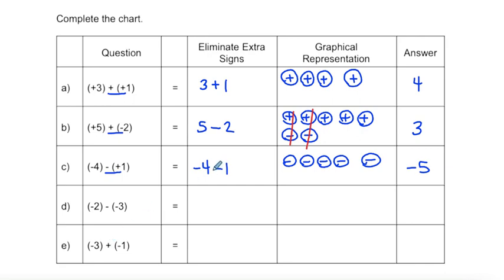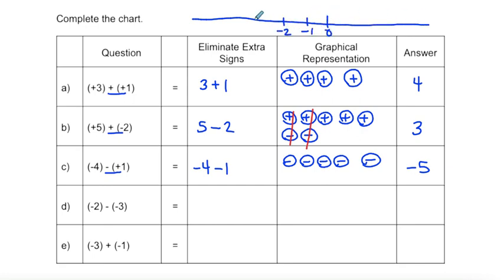This is where it can be confusing, because when we subtract we think the answer should be lower — and negative five is lower than negative four, even though five is greater than four as a positive number. On a number line: starting at negative four and subtracting one, we move left — ending at negative five. So a number line can really help here.